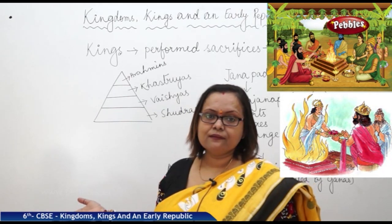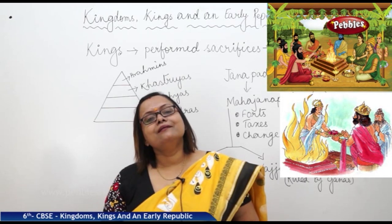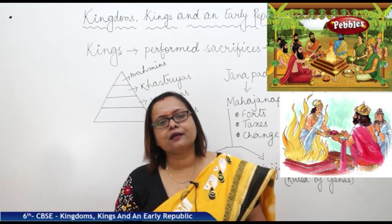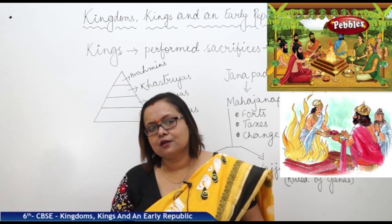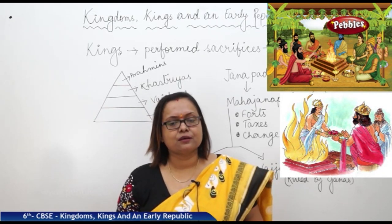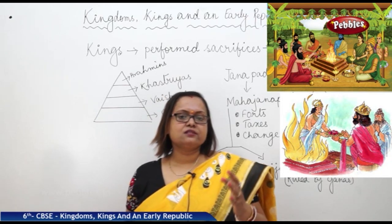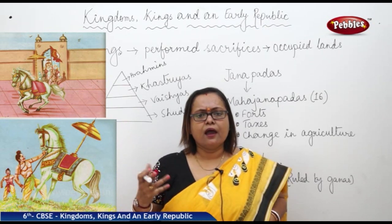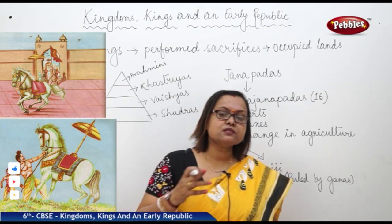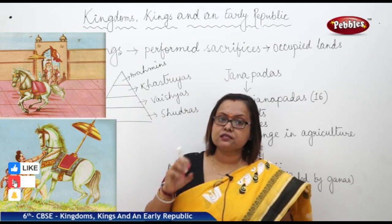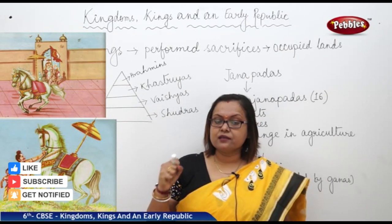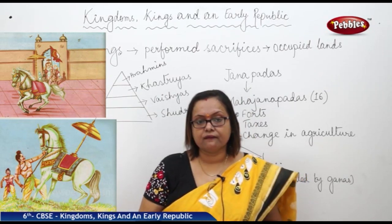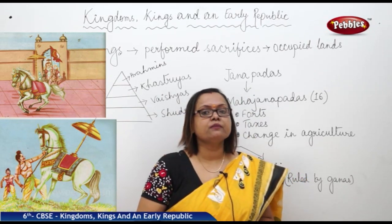Rather than doing that they performed many sacrifices, pujas and rituals. The Ashvamedha Yajna was like that. When a king started accumulating power — maybe winning 1, 2, or 3 battles — and was considered a powerful king, he performed a horse sacrifice yajna, called the Ashvamedha Yajna.